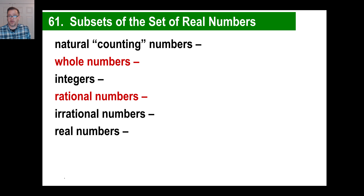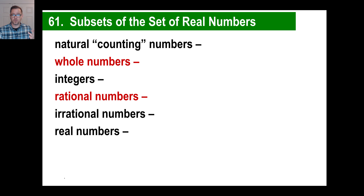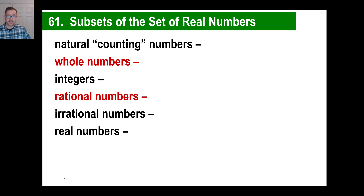2 times the square root of 2: it's obviously not something you count with, not a whole number, and not an integer. Is it irrational? The two types of irrational numbers are pi and numbers with square roots that don't work out evenly as integers — the square root of 16 is 4, so that one's not irrational, but the square root of 2 is not an integer. So 2 times the square root of 2 is irrational. By definition, it's not rational. Is it a real number — can you stick it somewhere on the number line? Yes, absolutely.